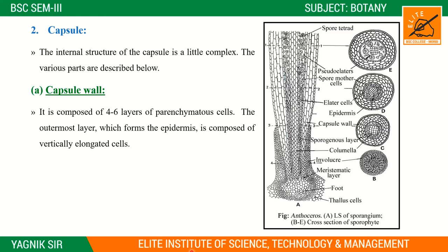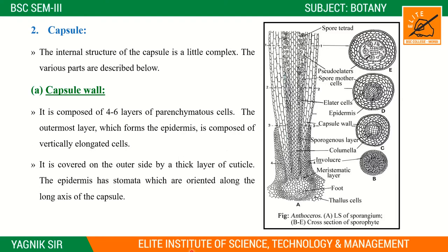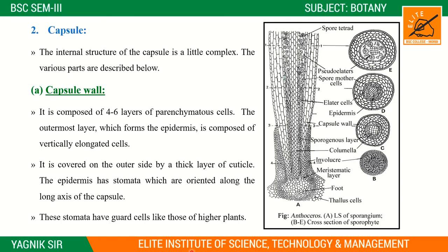The outer side of the epidermis is covered by a thick layer of cuticle — a cuticularized layer. This epidermis is interrupted by stomata, which are oriented along the long axis of the capsule.